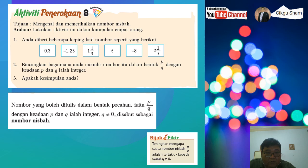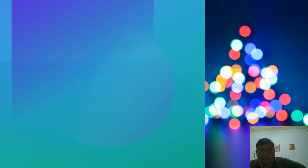Okay, bijak fikir, terangkan mengapa satu nombor nisbah P per Q adalah tertakluk kepada syarat Q tak boleh kosong. Okay, anak-anak tengok ya, kalau Q kosong, maksudnya penyebut dia kosong, contoh 2 per kosong, atau nombor-nombor lain negatif 5 per kosong. Okay, jadi nombor-nombor ni tidak tertakrif. Kalau anak-anak tekan calculator pun nanti dia keluar error kan. So itu sebab Q tak boleh sifar atau Q tak boleh kosong.